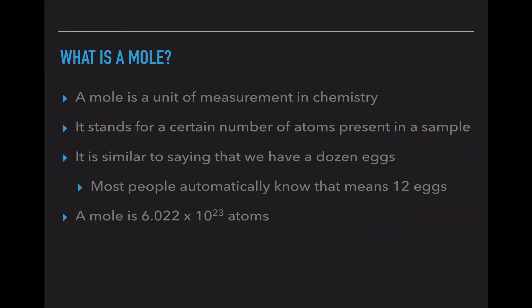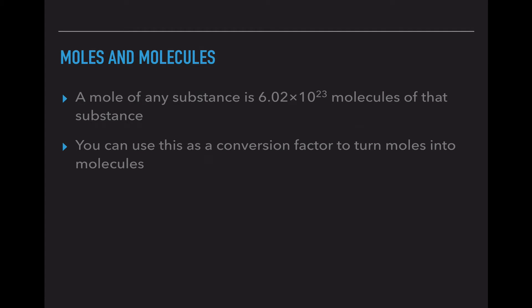In the first unit, I introduced the idea of the mole. And the mole is a unit of measurement in chemistry that stands for a certain number of atoms present in a sample. And I said it was similar to saying that we have a dozen eggs, because when I say the term dozen, everyone thinks automatically of 12. So the mole is 6.022 times 10 to the 23 atoms. We've already converted with this, but now I want to take those conversions one step further. So again, this slide should be a review because we did cover this in the first unit.